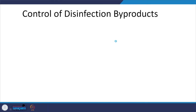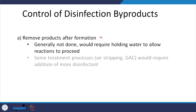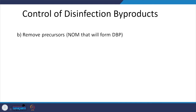Control of DBPs: after trihalomethanes or haloacetic acids have formed, removing them is difficult — options include adsorption of hydrophobic compounds onto GAC, air stripping, or addition of more disinfectant, but these are generally not done as it means creating a problem then trying to solve it. What is done instead is removing the cause — the precursors. Since Cl₂ plus NOM leads to DBP formation, we target the NOM and remove it. That is the remove-the-precursor approach.